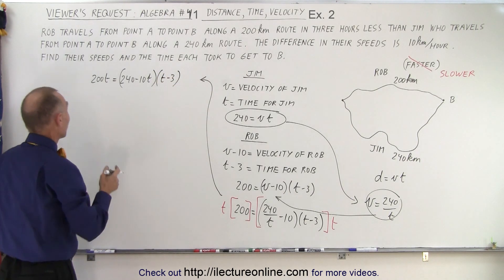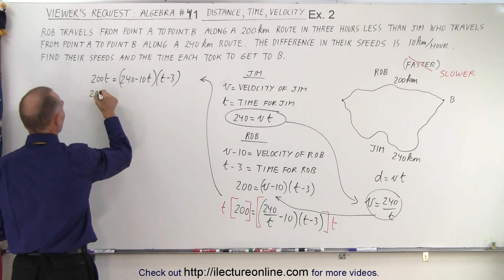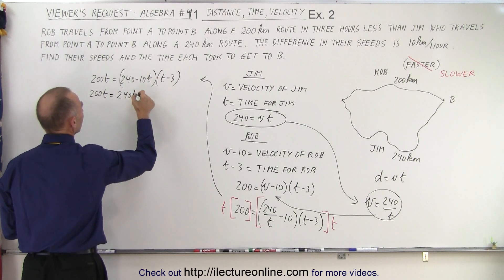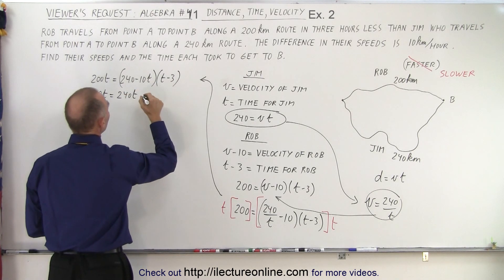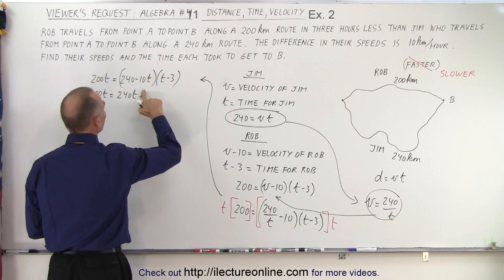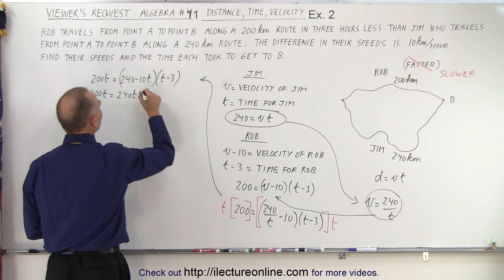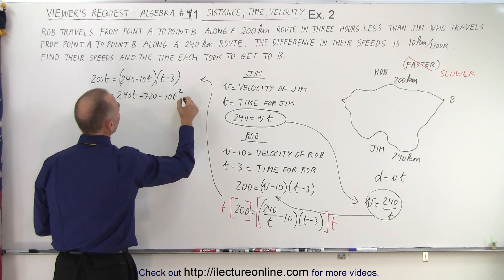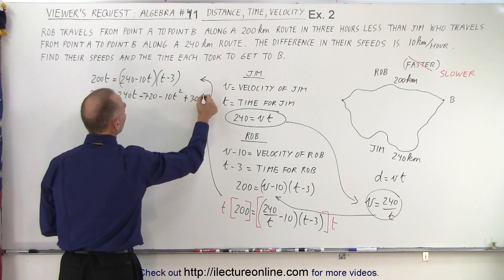Now we multiply this out and see what we end up with. 200T is equal to 240 times T, which is 240T. This times this, that would be, oh not plus, that's a minus, minus 720, minus 10T squared, and plus 30T.